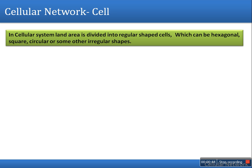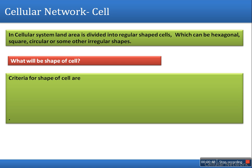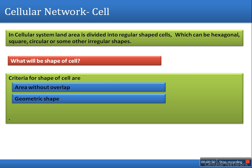There are three criteria for the shape of a cell. First is area without overlap. If there are multiple cells, the area must not be overlapped. Second is geometric shape, so a shape of a cell can be geometric like circle, triangle, rectangle, or square. Third is area of cell - how much area is covered by that shape.